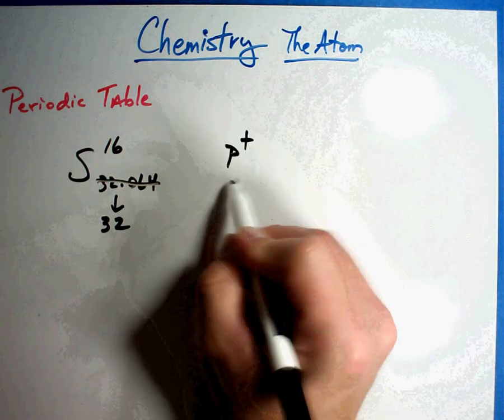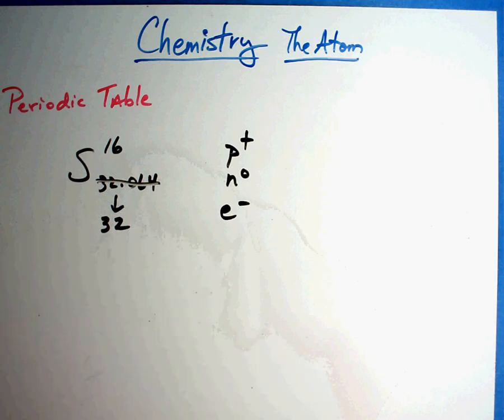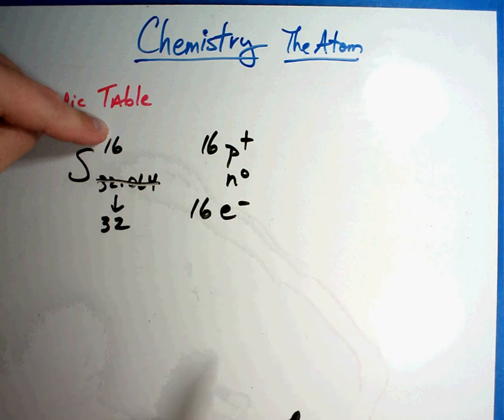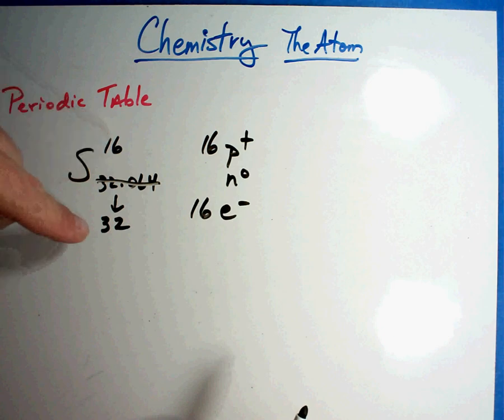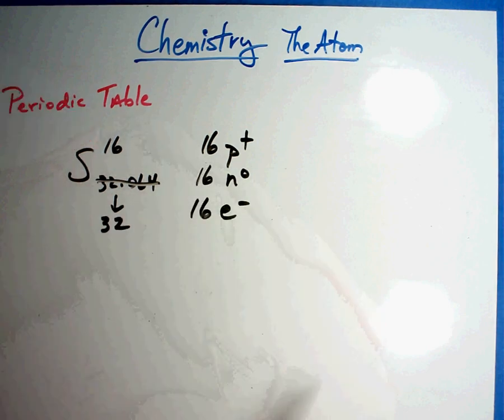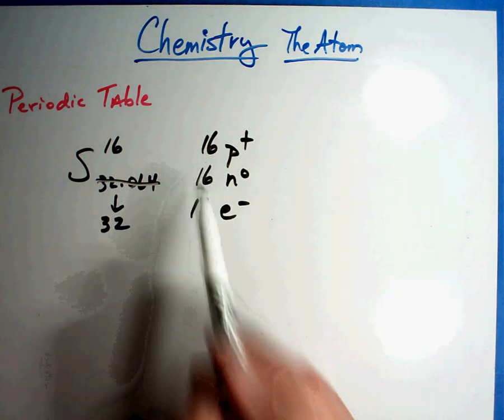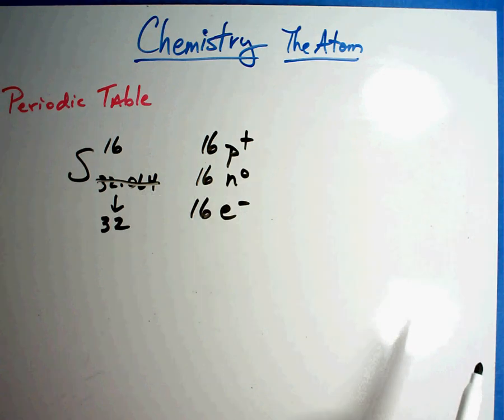We're going to try to figure out the protons, the neutrons and the electrons. Well, the atomic number, the smaller of the two numbers is automatically the protons. And if you have 16 pluses, that means you're going to have 16 minuses as well to balance it out. To get the neutrons, we're going to subtract the mass number from the atomic number, 32 minus 16. You happen to have 16 neutrons as well. So sometimes you're going to have the same exact number. Sometimes your neutron number is going to vary. It really doesn't matter, but you have to do the math every single time in order to get protons, neutrons and electrons that are found in the atom.